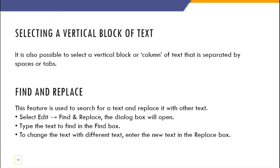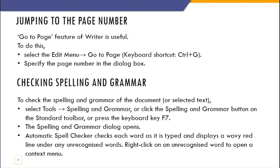Find and Replace: for example, in a book of a thousand pages, if you want to find a particular word, instead of navigating all pages manually, use the Find and Replace option. Go to the Edit menu and select Find and Replace — a dialog box will appear where you can write the text. Alternatively, press Ctrl+F to open the same dialog box directly.